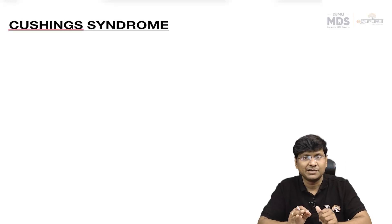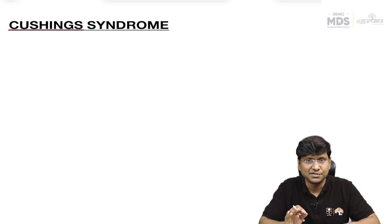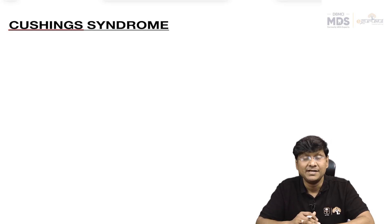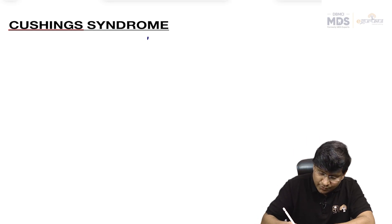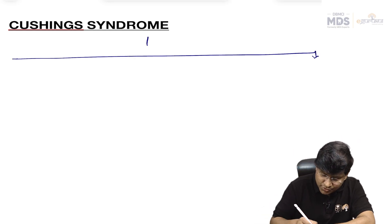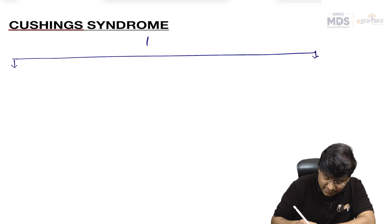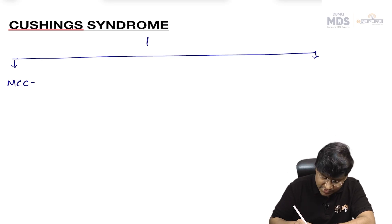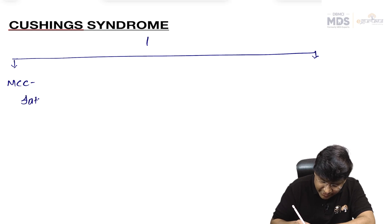Continuing with the quick revision of Cushing's: what exactly is Cushing's? It is a clinical condition characterized by excessive production of steroids. The most common cause of Cushing's syndrome is the supplementation of iatrogenic steroids.